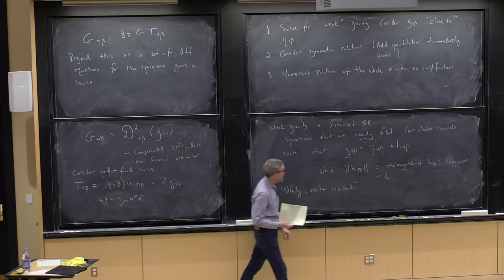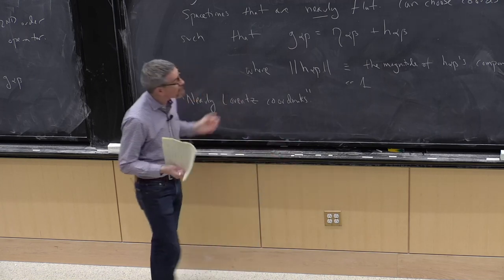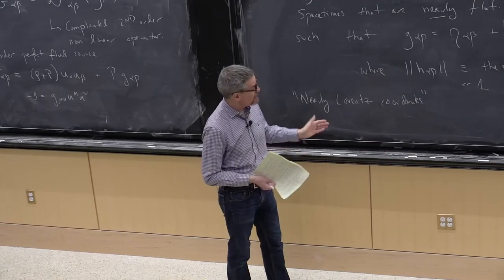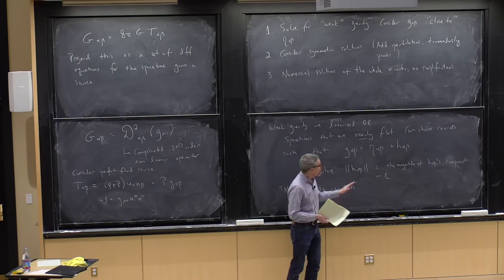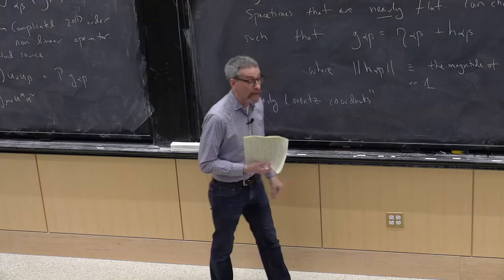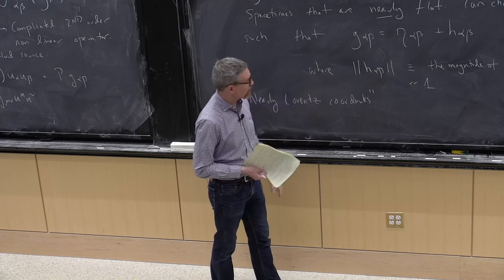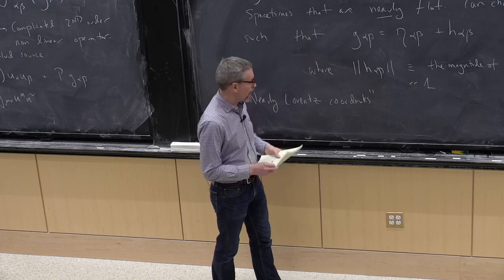Such a coordinate system is as close to a globally inertial coordinate system as is possible to make. This basically amounts to coordinates that are Cartesian-like on their spatial slices. You could work in other coordinate systems — for instance, if you work in one whose spatial sector is spherical-like, some components will grow very large at large radius away from the gravitational source, which makes the analysis less convenient.